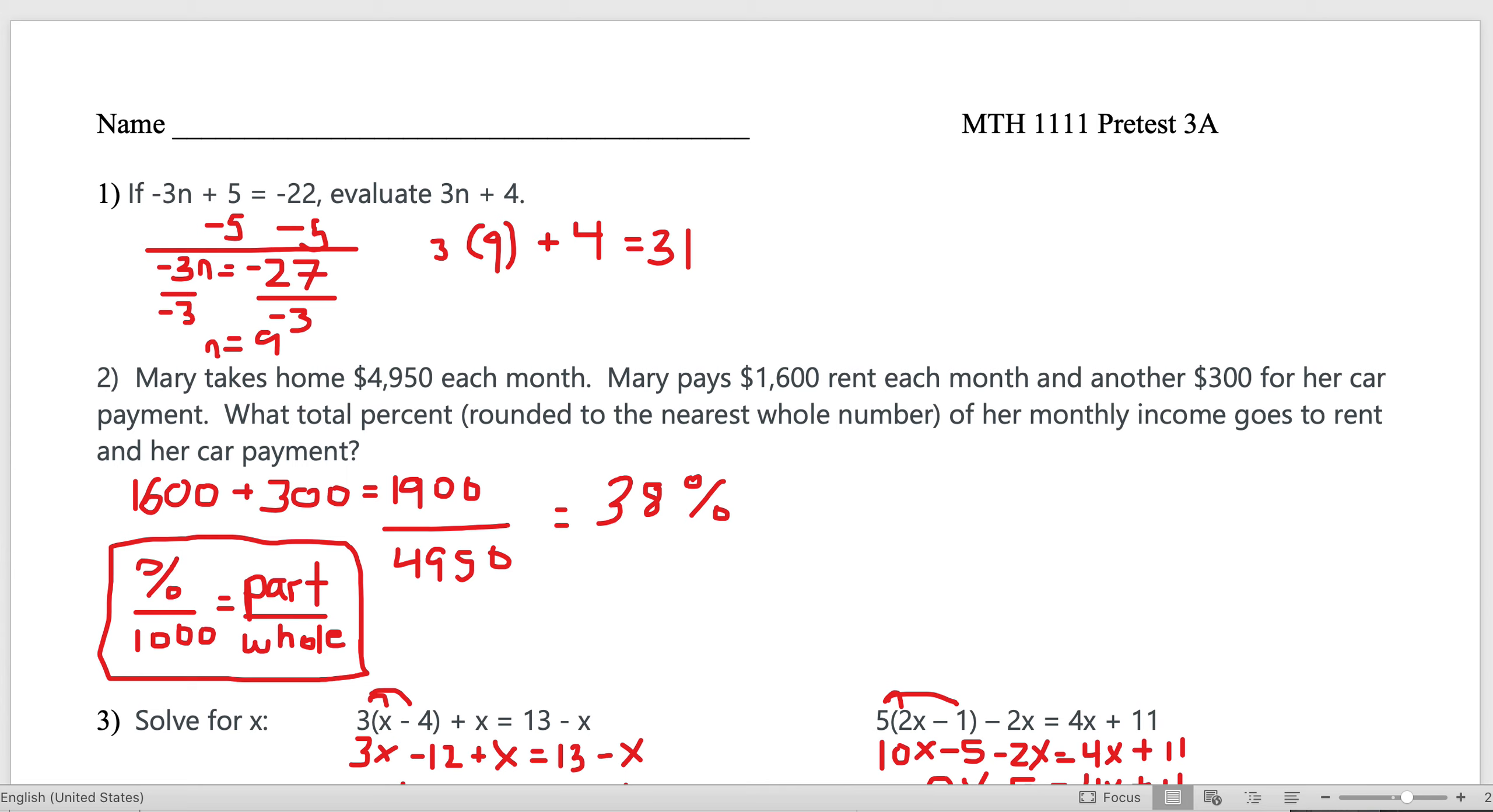Without further ado, we have the first question. If -3n + 5 = -22, evaluate 3n + 4. This asks you to combine two skills. First, can you solve an equation? Standard two-step equation: subtract 5 from both sides, that's -27. Divide both sides by -3 and we get 9. But that's not the answer they're looking for.